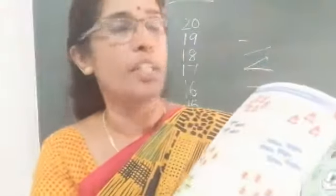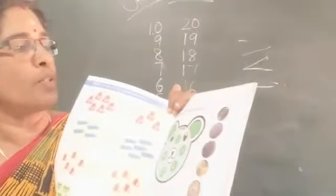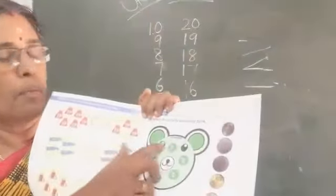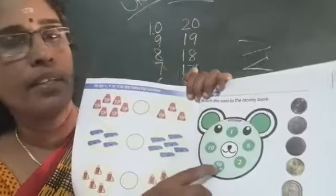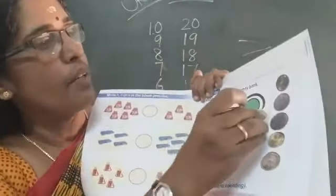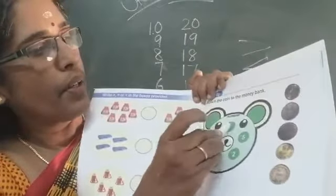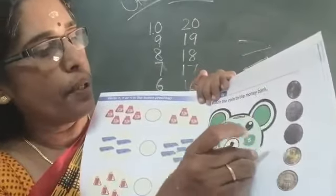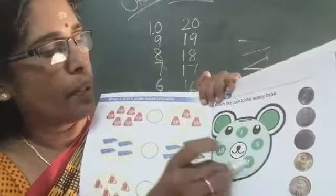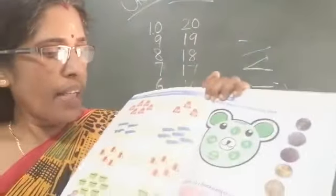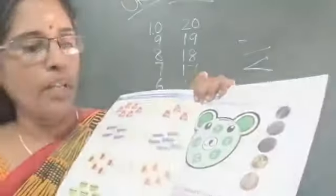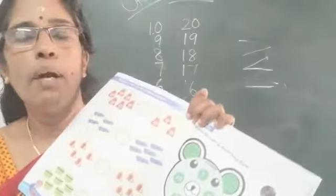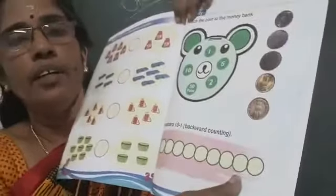Next page number 14 — match the coin to the money bank. Match here: money bank, coins match here. 1, 2, 5, 10 — match here, done. Write the numbers: 10 to 1 backward counting. Fill in the blanks — that is number 14. Okay?